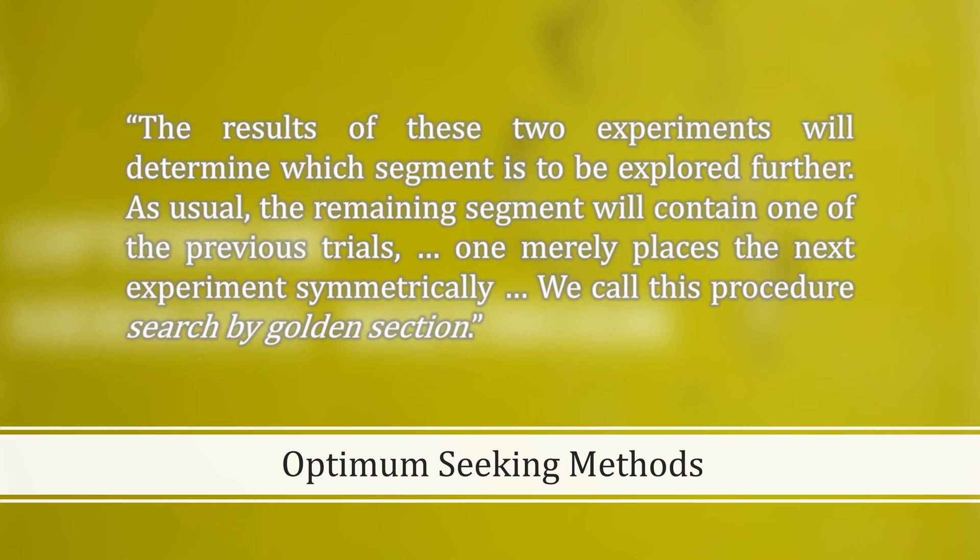The results of these two experiments will determine which segment is to be explored further. As usual, the remaining segment will contain one of the previous trials. When we place the next experiment symmetrically, we call this procedure search by golden section.